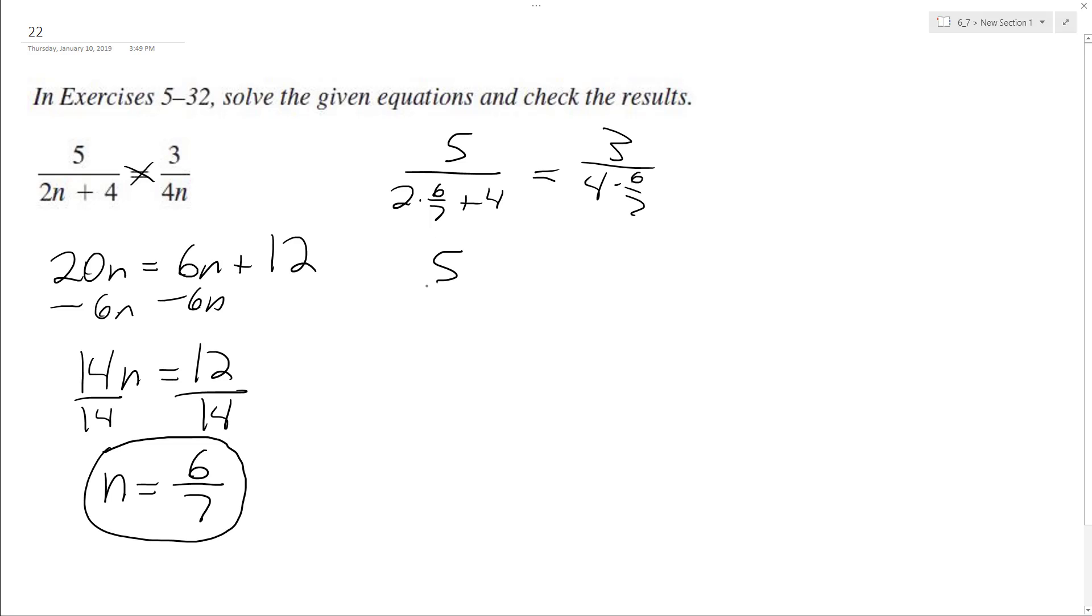Let's test this. 5 over, so it ends up being 12 over 7 plus 4 equals 3 over 24 over 7. 4 plus that is 28, so it ends up being 5 over 40 over 7 equals 21 over 24.